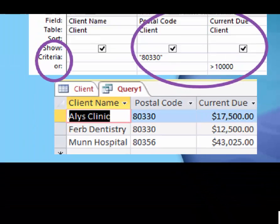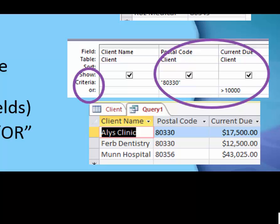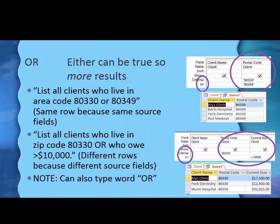And so, what I got here is the first one is 80330, and it does happen to be over $10,000. The second one is 83. That one happens to be, but I also have the 80356 that's not in the 80330 area code, but it is over $10,000. And so, that one gets included because of that. OR gives you more results.